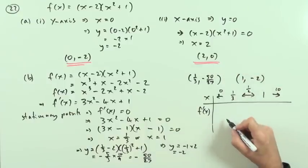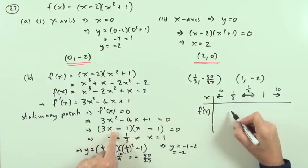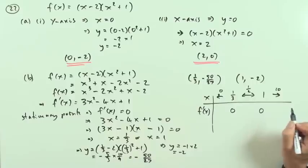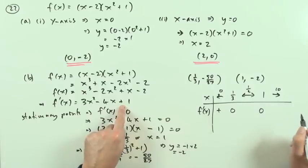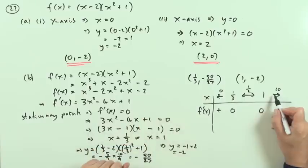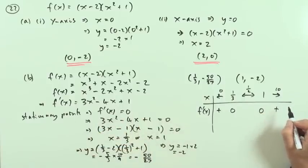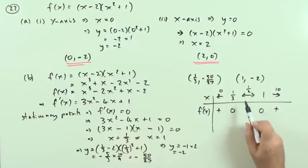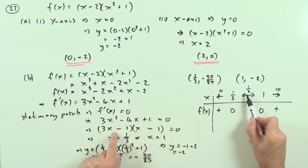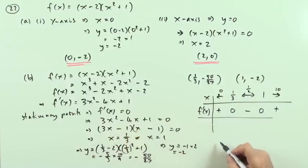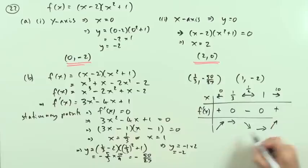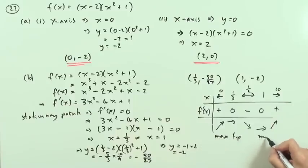At x equals one third the derivative is zero, and at x equals one it's also zero. At x equals zero: 3(0) minus 4(0) plus 1 equals 1, which is positive. At x equals 10 the 3x squared term dominates — that's positive. At x equals one half, using the factorised form (3x minus 1)(x minus 1): three halves minus one is positive, one half minus one is negative — positive times negative is negative. So the sign goes positive, zero, negative, zero, positive — up, flat, down, flat, up — giving a maximum turning point then a minimum.